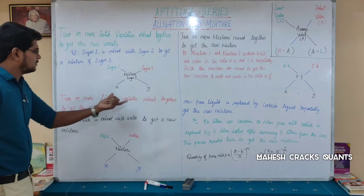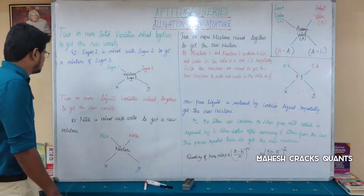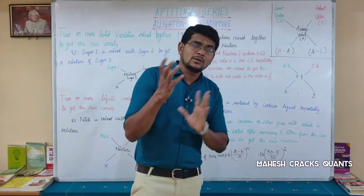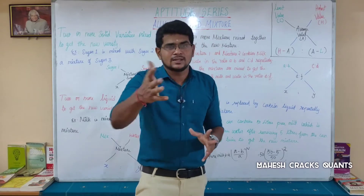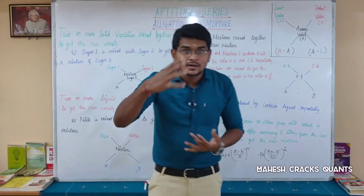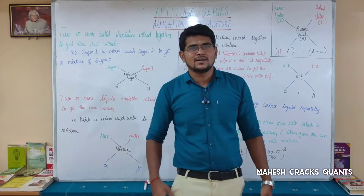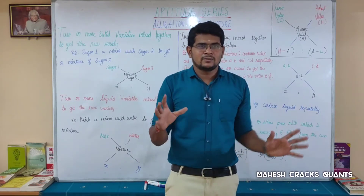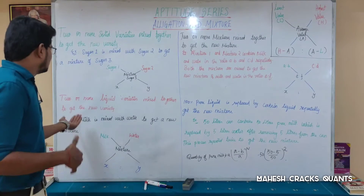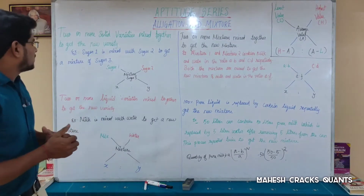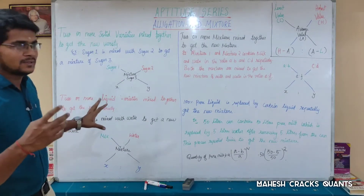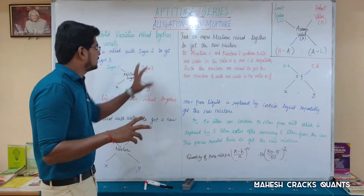Two or more liquid varieties mixed together to get a new variety. We have to mix solid and liquid. For example, we have to mix liquids — Milk and water, Alcohol and water. That's the main thing. Alcohol and water is mixed. Milk and water is mixed. We will mix all of these.